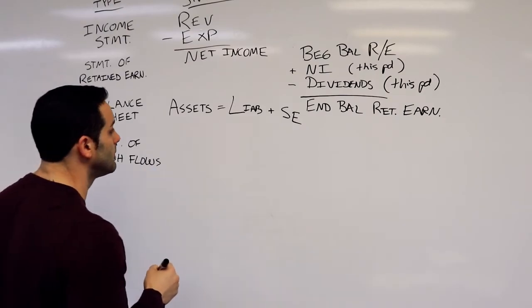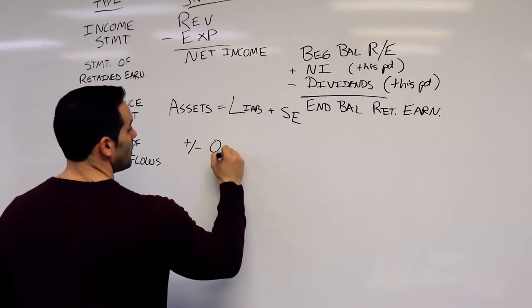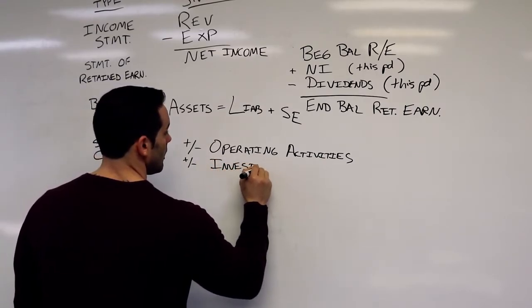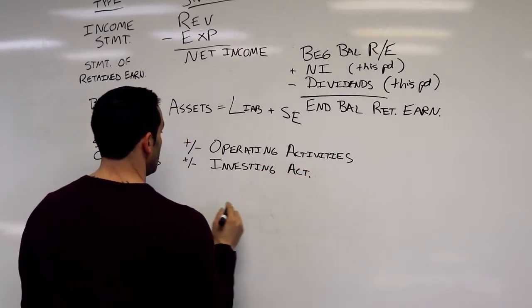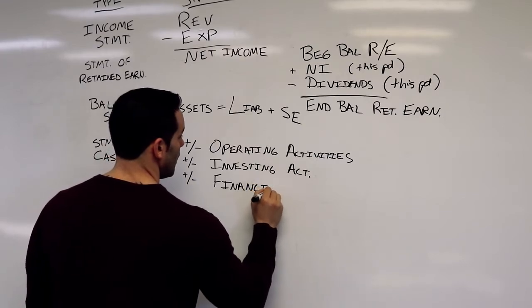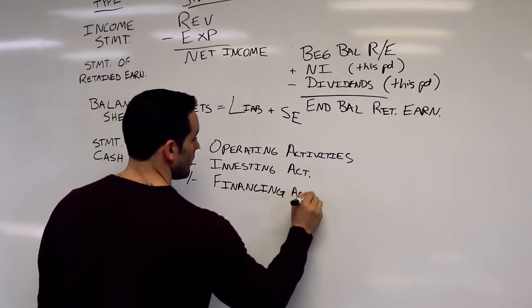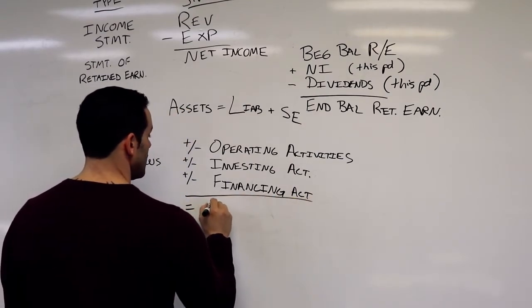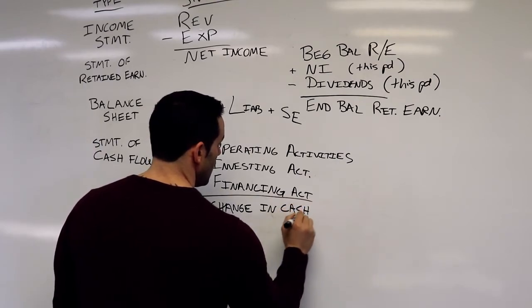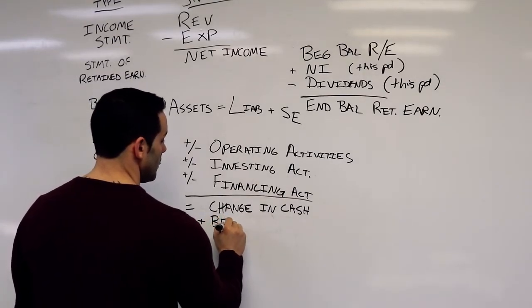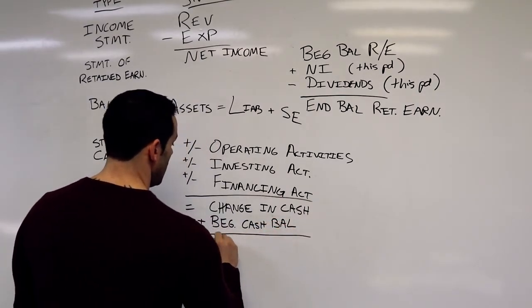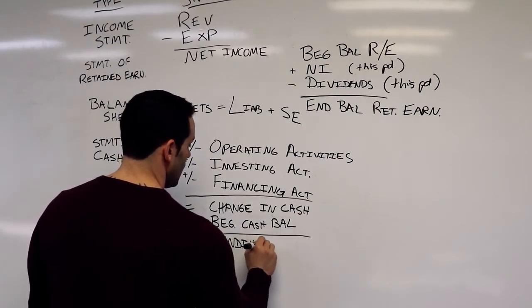Finally, the statement of cash flows, which is pluses or minuses in operating activities, pluses or minuses in investing activities, pluses or minuses in financing activities. This gives us our change in cash. But don't forget we need to add what our beginning cash balance was, and that will give us our ending cash balance.